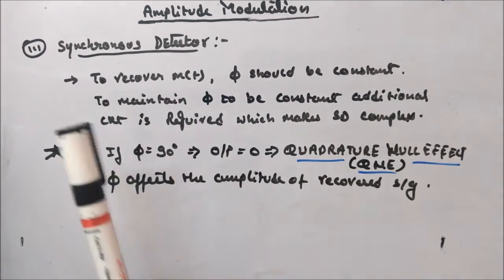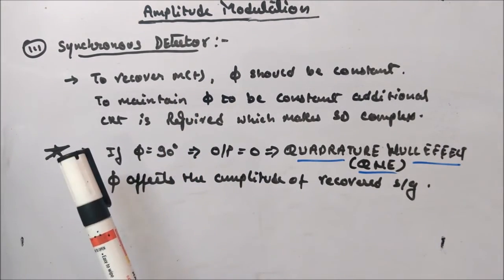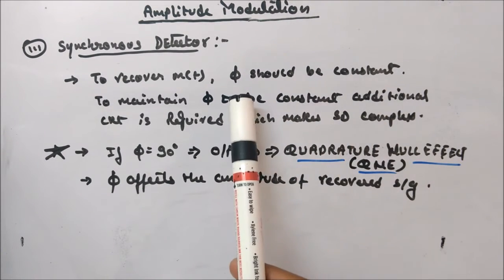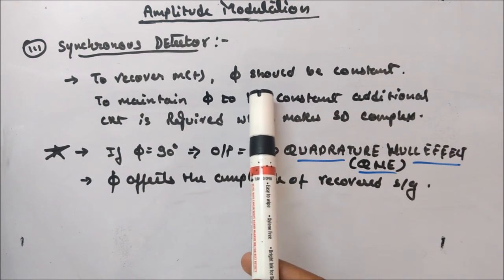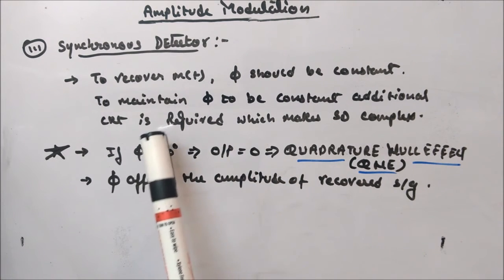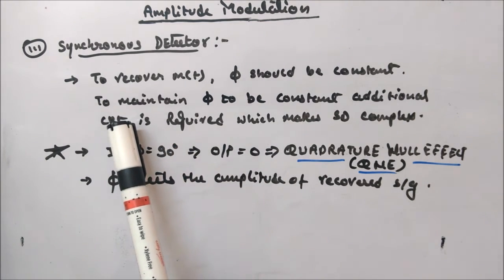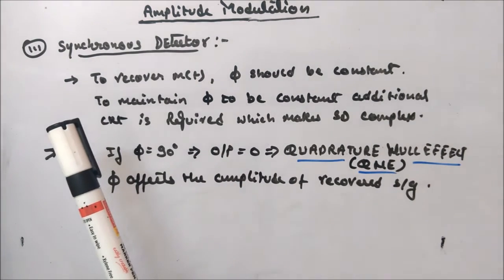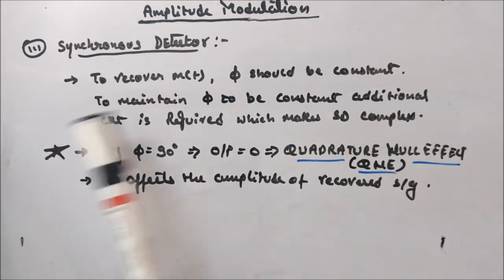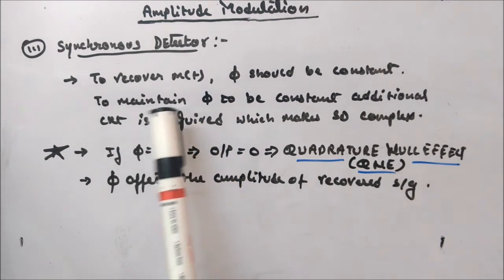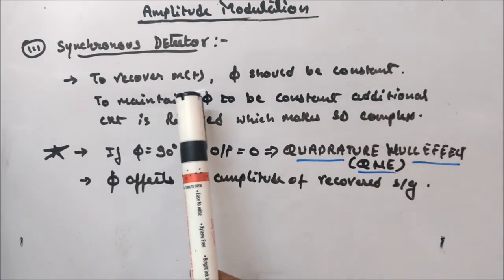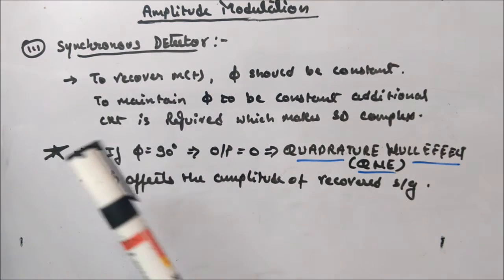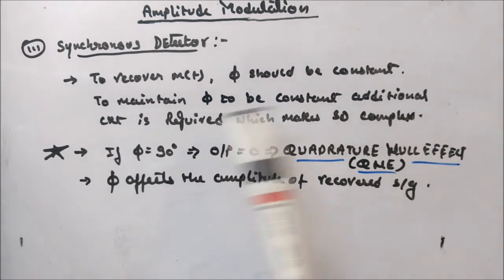The key point to recover m(t) in a synchronous detector is that φ must be constant. In that case, cos(φ) is constant, can be removed by an amplifier, and you can perfectly recover m(t). However, to maintain φ as a constant, additional circuitry is required, which makes the synchronous detector complex. φ should have no dependence on time — it must be a fixed constant — so that we can extract the message signal.